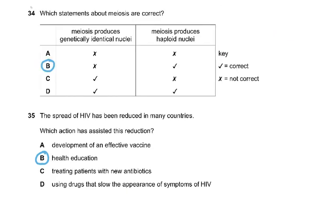Question 34. Which statements about meiosis are correct? Meiosis produces genetically identical, no, does not produce genetically identical, so it could have been either this or this. Meiosis produces haploid nuclei, yes. That is why the answer was B, it does not produce genetically identical nuclei because one of each chromosome goes into it.